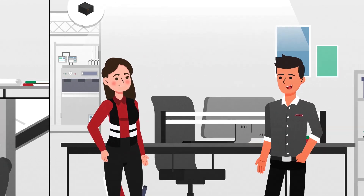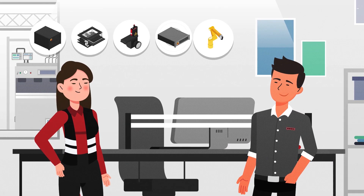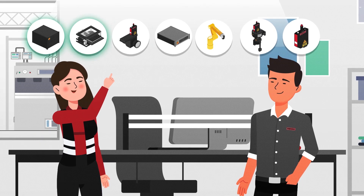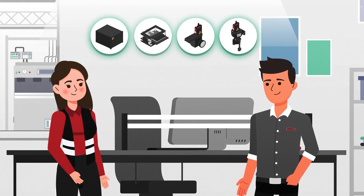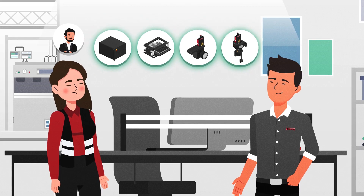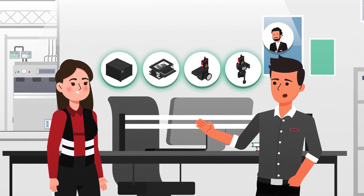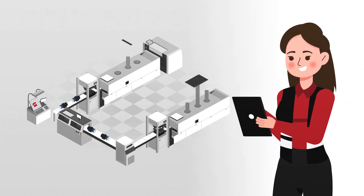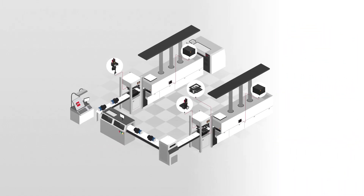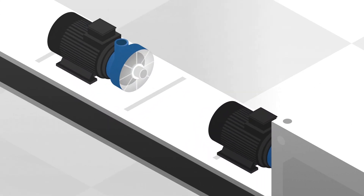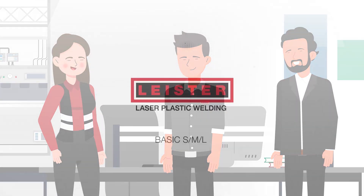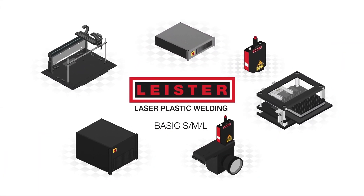After detailed consultation and product testing, we will put together the optimum components. Basic SML works according to the building block principle — you decide the depth of integration and only select the components you need. With increasing integration, we can even take over your process responsibility. Best of all, all of your devices run on a single software, meaning you can control and manage all Lyster hardware in one program.